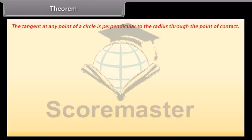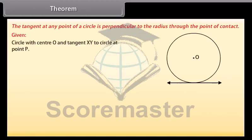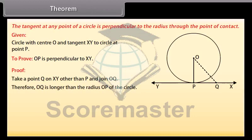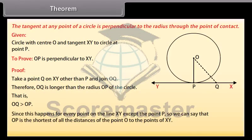Theorem: The tangent at any point of a circle is perpendicular to the radius through the point of contact. We are given a circle with center O and a tangent XY to the circle at a point P. We need to prove that OP is perpendicular to XY. Take a point Q on XY other than P and join OQ. The point Q must lie outside the circle, because if Q lies inside the circle then XY will become a secant and not a tangent. Therefore OQ is longer than the radius OP, that is OQ is greater than OP. Since this happens for every point on line XY except point P, OP is the shortest of all distances from O to points on XY. Hence OP is perpendicular to XY.